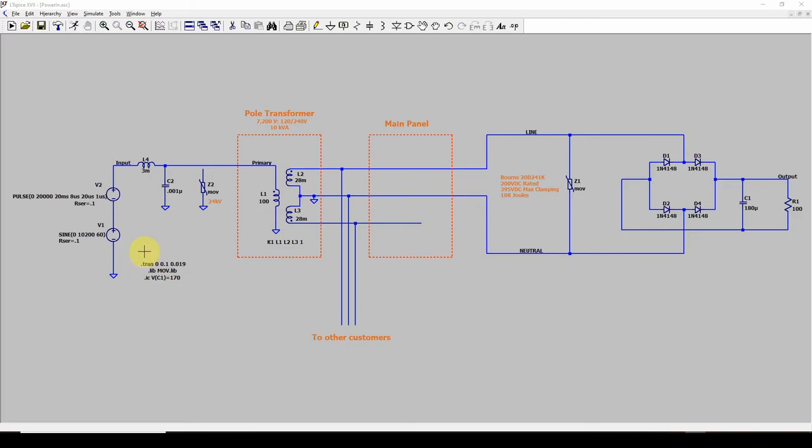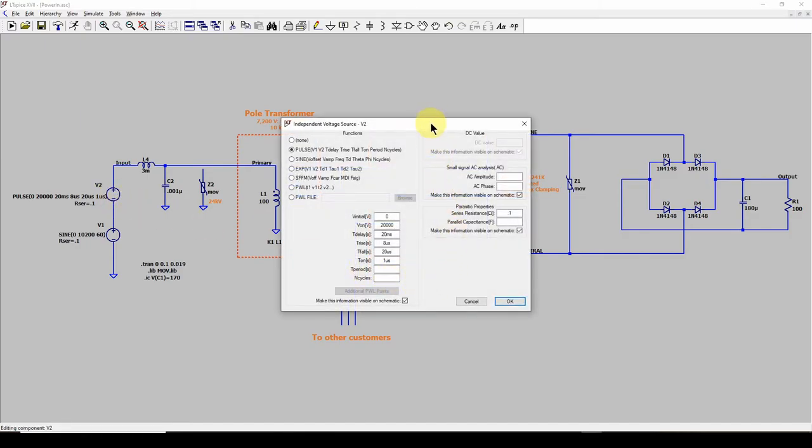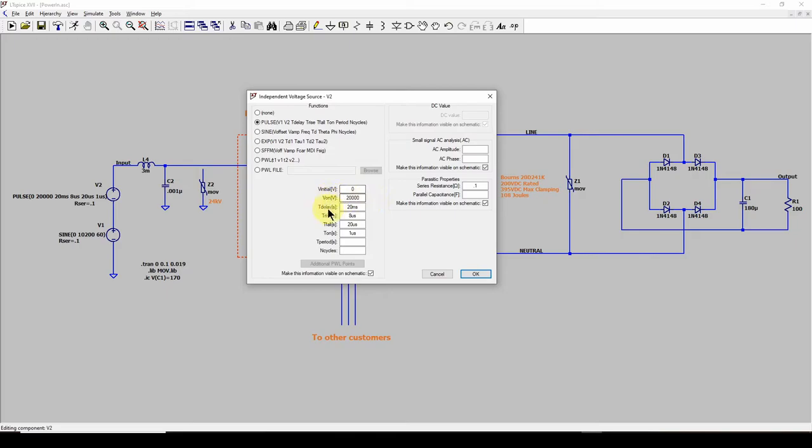So what I'm going to do is I am going to simulate this voltage and I'm also adding a pulse in here. And we said we're going to use an 8 by 20 microsecond pulse. And I'm starting out initial voltage of zero. I just picked 20,000 volts peak just because we're going to pick different ones. The delay, I just picked 20 milliseconds so it would be on our plot. And then the rise time, 8 microseconds, fall time, 20 microseconds, and it's on for 1 microsecond.